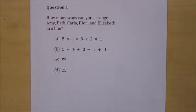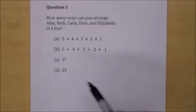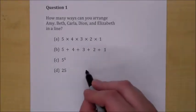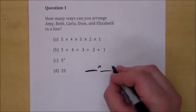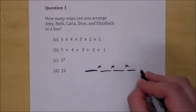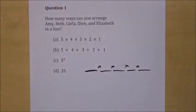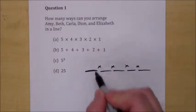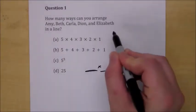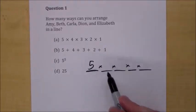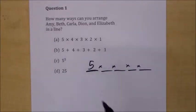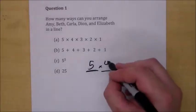This is your classic permutation question — order matters. How many choices do you have for the first one? How many choices do you have for the second one? How many choices for the third, the fourth, and the fifth? Well, if you choose one of these people to sit here, you have five choices. And if you already put somebody in the first seat, you only have four choices left.